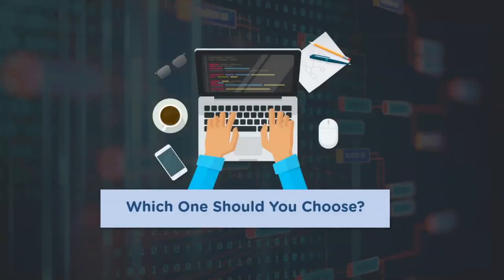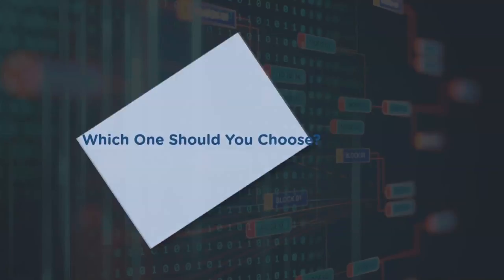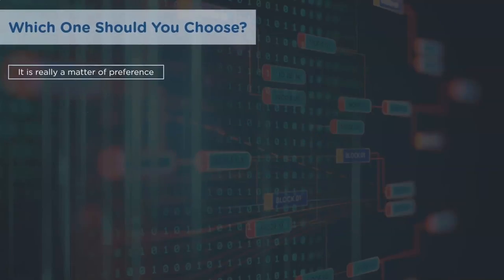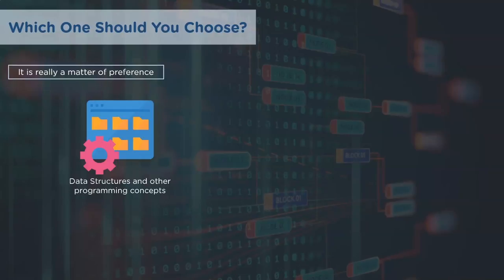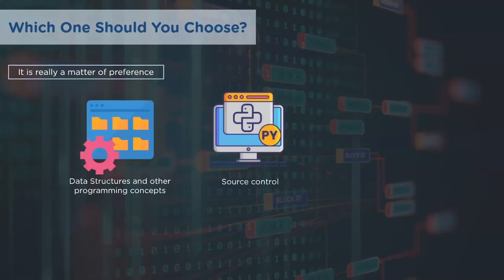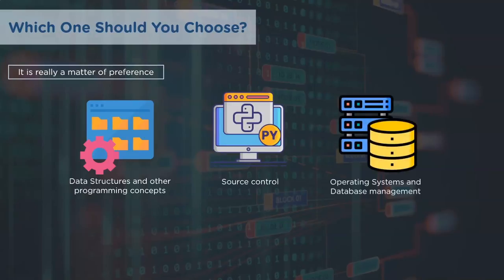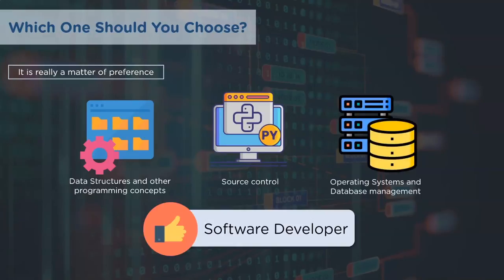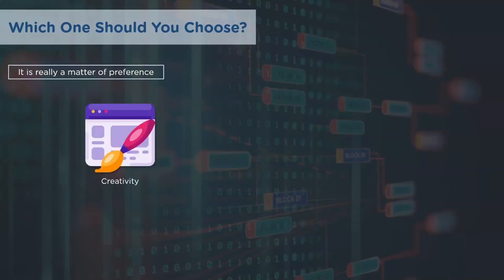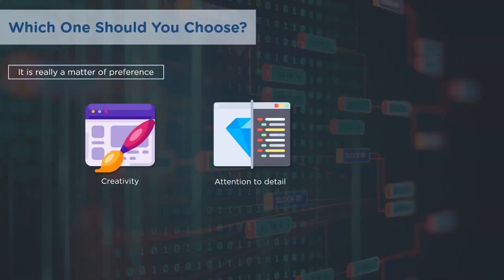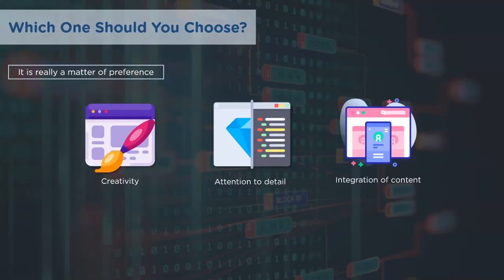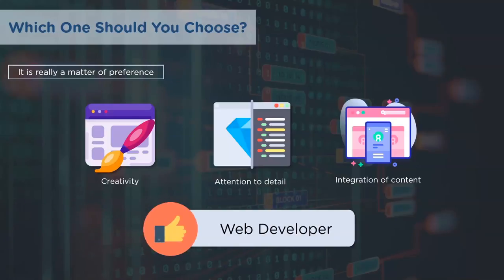I'm sure you must be confused as to which one to choose — it's really a matter of preference. If you have strong knowledge of data structures, file systems, algorithms, source control, and operating and network systems, then software development would be a better choice. But if you have creative ideas for websites, love designing them, have a good understanding of HTML and CSS, and have the knack to integrate design ideas to create responsive user interfaces, then web development could be a better career path.